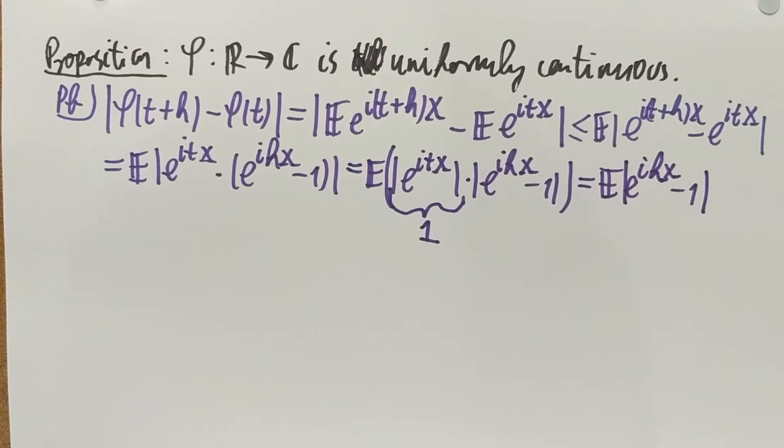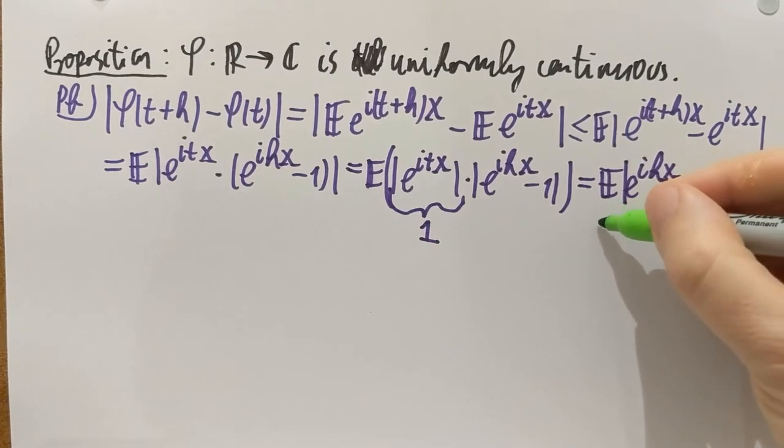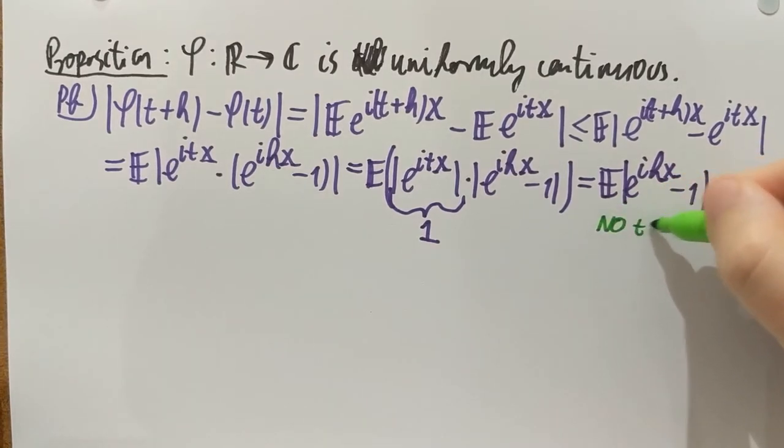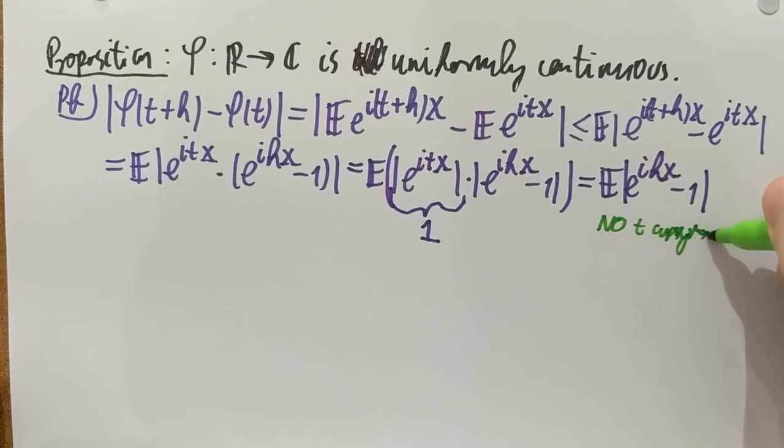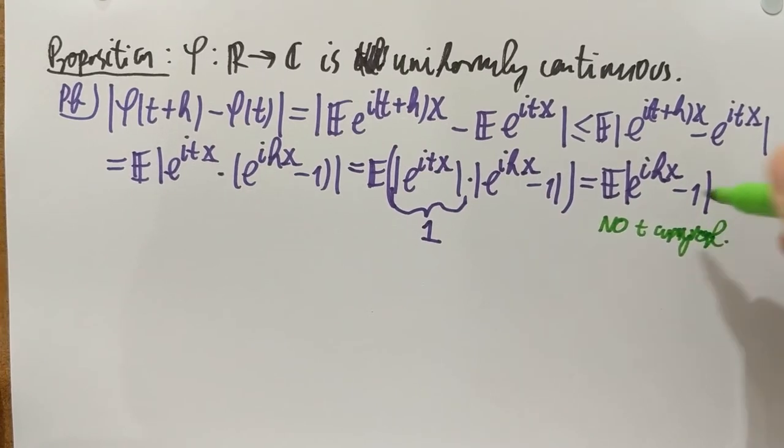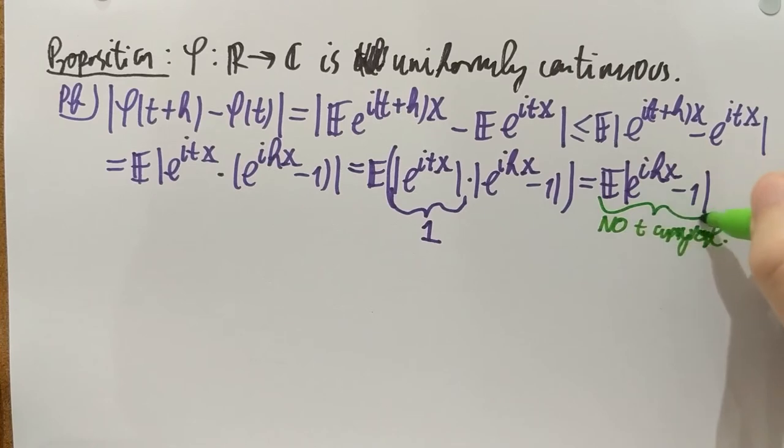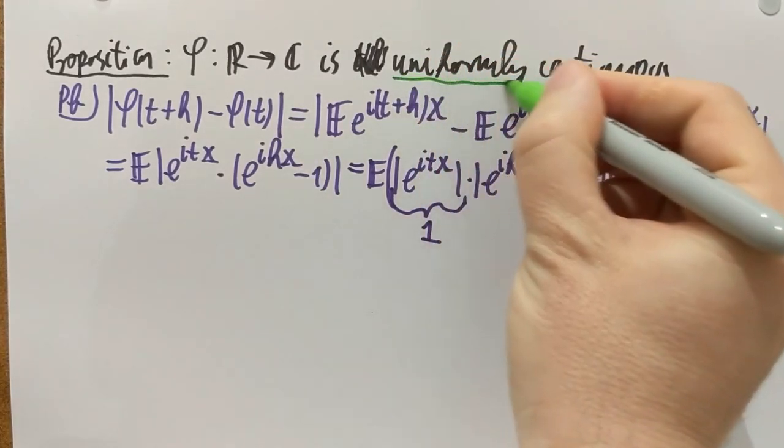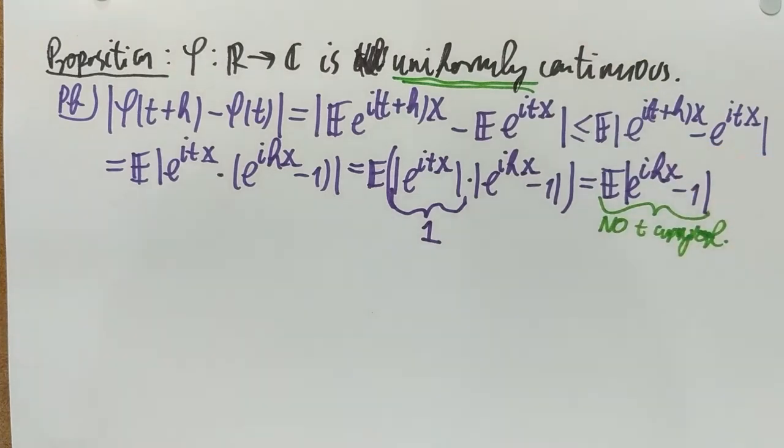Only, at this moment, notice something very important, which is very useful for uniform continuity. At this moment, there is no t anymore. No t anymore on this one. Any bound I make here is independent of t at this moment. And therefore, anything I do is now uniform in t. So, uniformly, the word uniformly is already justified as soon as I can put a bound here.